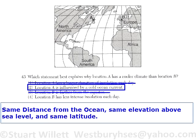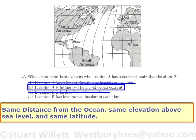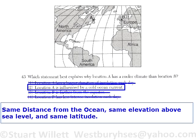Number four: location B has less intense insolation each day. Again, this cannot be correct. The latitude is the same, the elevation is the same, and the distance from the ocean is the same, so the intensity of insolation will be the same. The answer is two — location A is influenced by a cold ocean current, which is highlighted on the reference table.